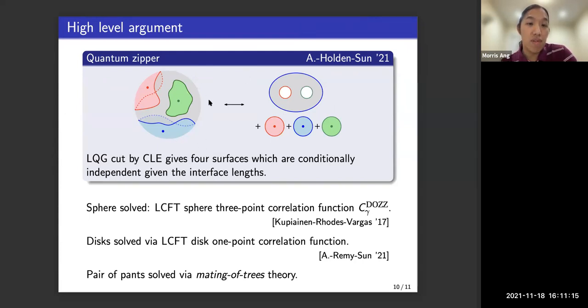So we have this diagram, and we have a bunch of surfaces, like we have this sphere, we have these disks, and we have this pair of pants type surface. And in fact, all of these surfaces can be understood. This sphere, for instance, is understood via the LCFT three-point correlation function, which is actually the DOZZ formula from before. And this was computed by Kupiainen, Rhodes, and Vargas. For these disks, they are understood using the LCFT one-point correlation function on the disk, computed by myself, Guillaume Remy, and Sun Sun rigorously.